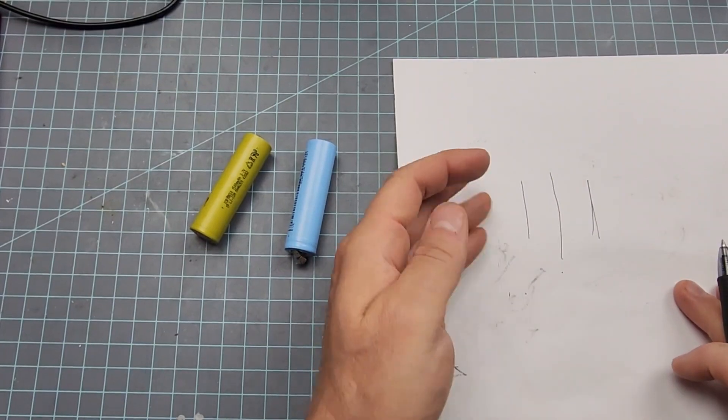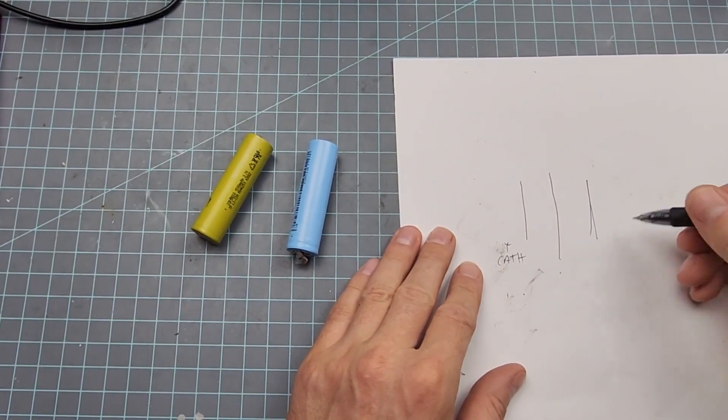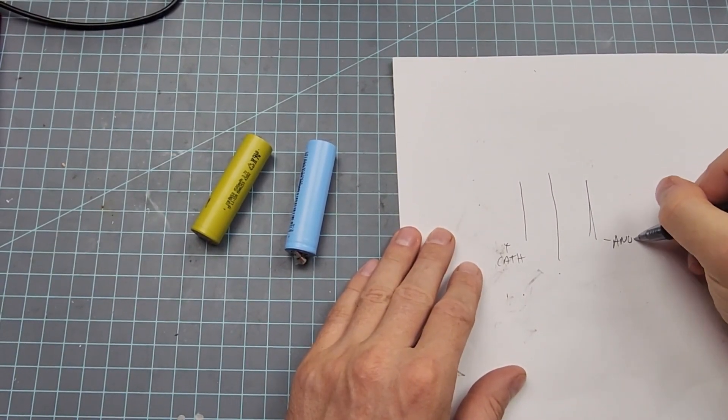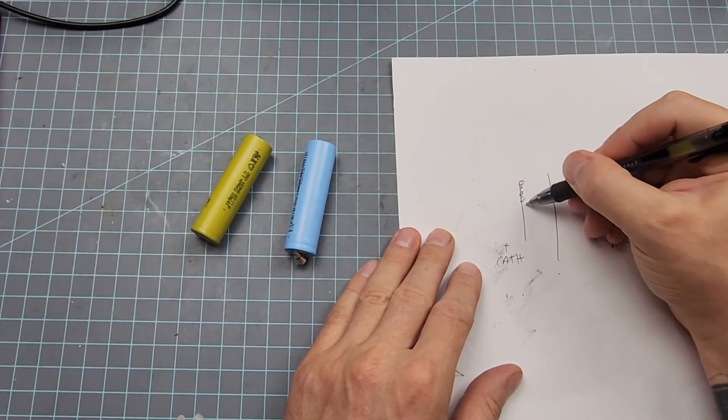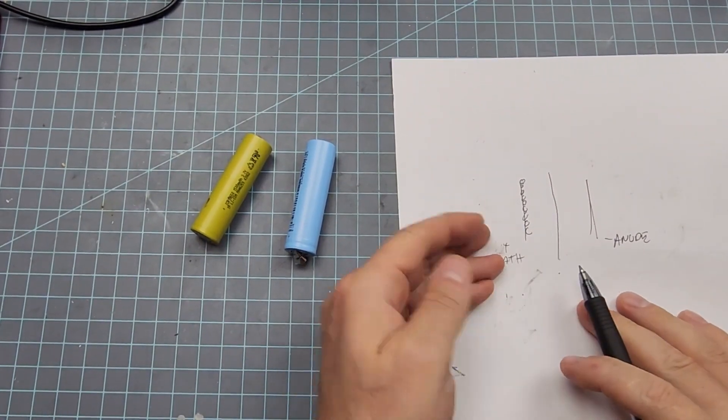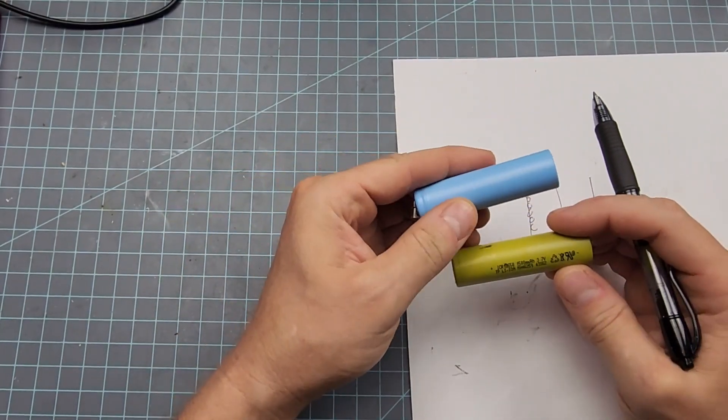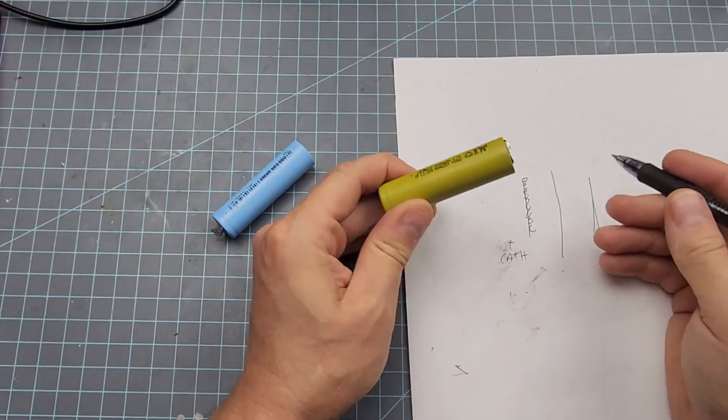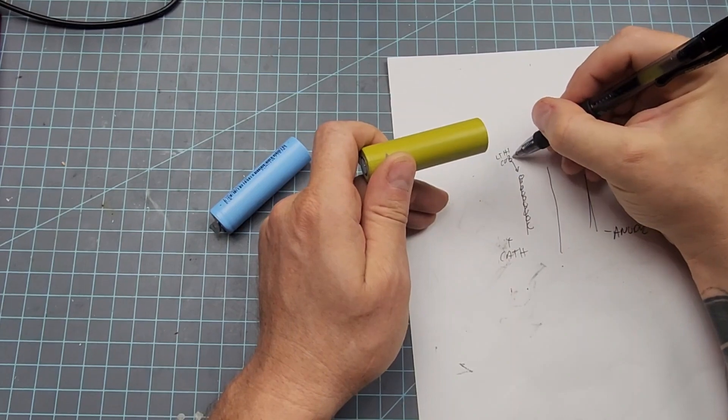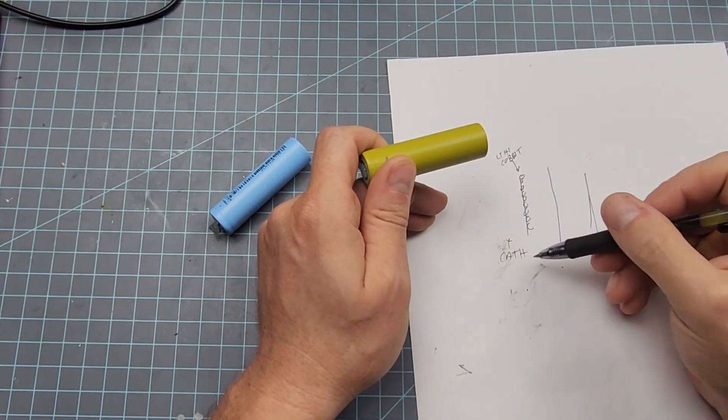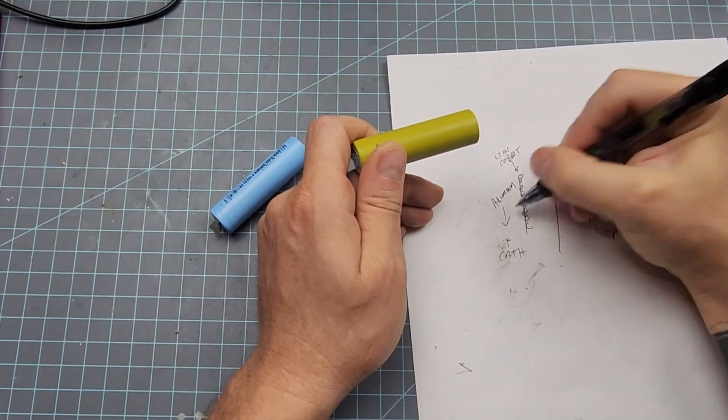They all operate under basically the same premise. You have a positive cathode on this side and a negative anode on this side. This is normally an aluminum sheet coated with some lithium compound. In this example, both of these are ICR batteries - lithium cobalt. So this is a lithium cobalt compound that coats this aluminum cathode.